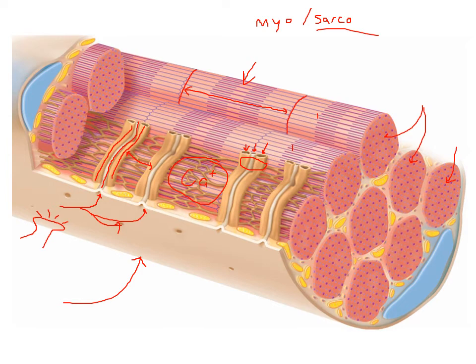As the sarcoplasmic reticulum gets close to the transverse tubule on either side of it, it will turn into a larger tube and run right alongside the transverse tubule. So every transverse tubule is going to have two enlarged portions of the sarcoplasmic reticulum running alongside it. That group of three tubes — one in the middle called the transverse tubule and the ones on either side from the sarcoplasmic reticulum — together form something called the triad. The purpose of this enlargement is to ensure good contact, because an electrical charge requires good contact to get full distribution.